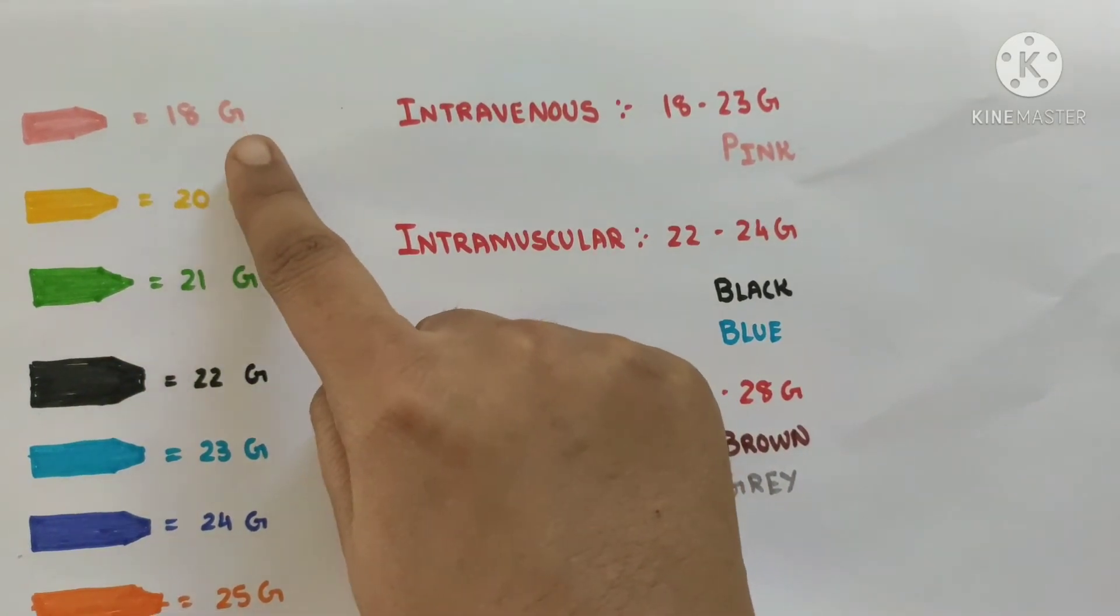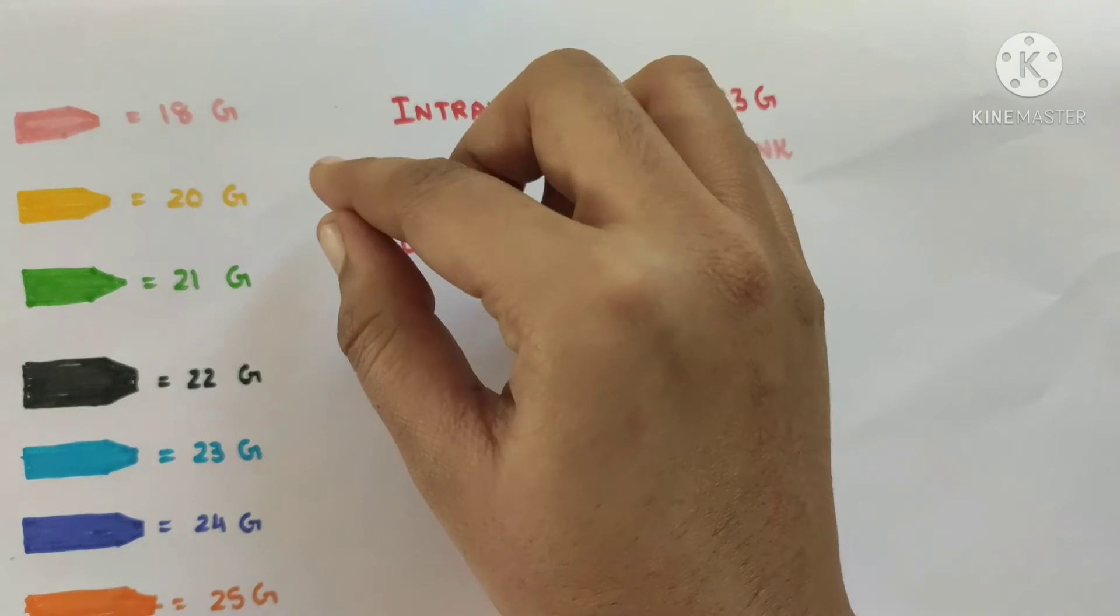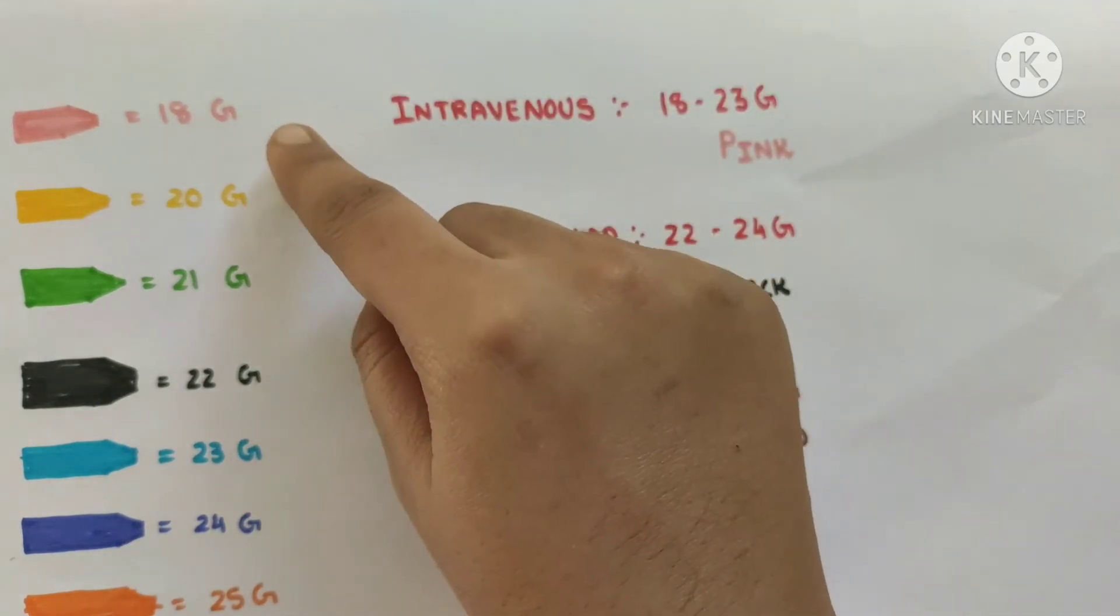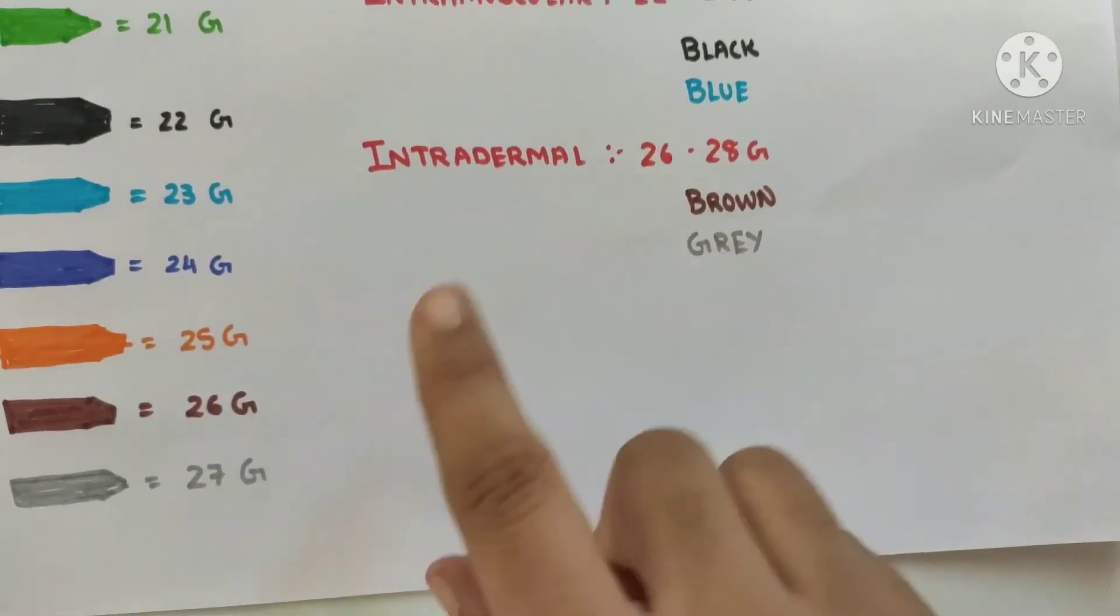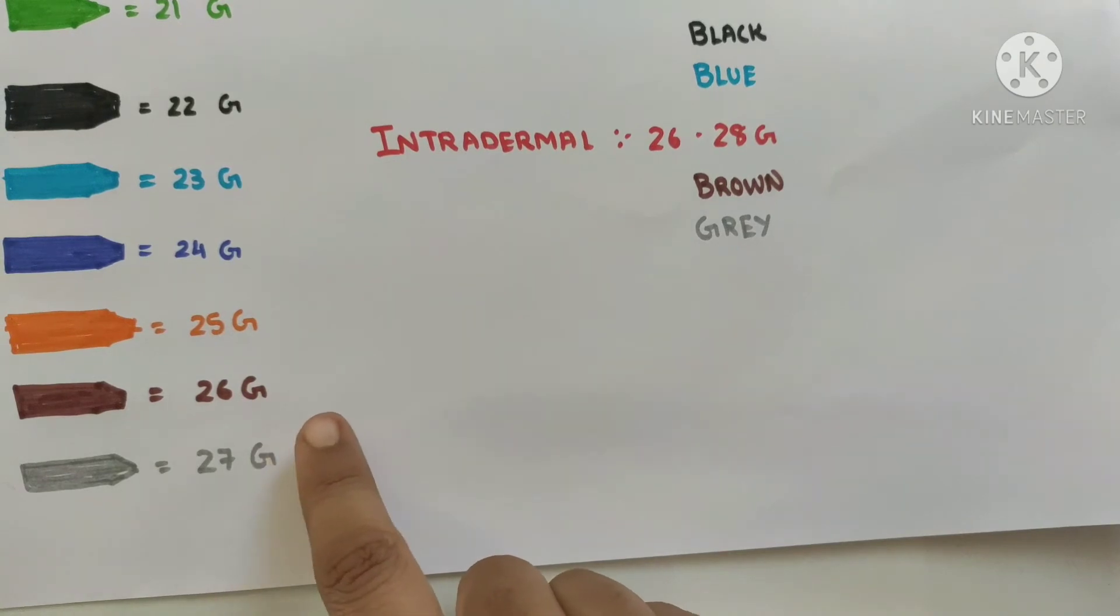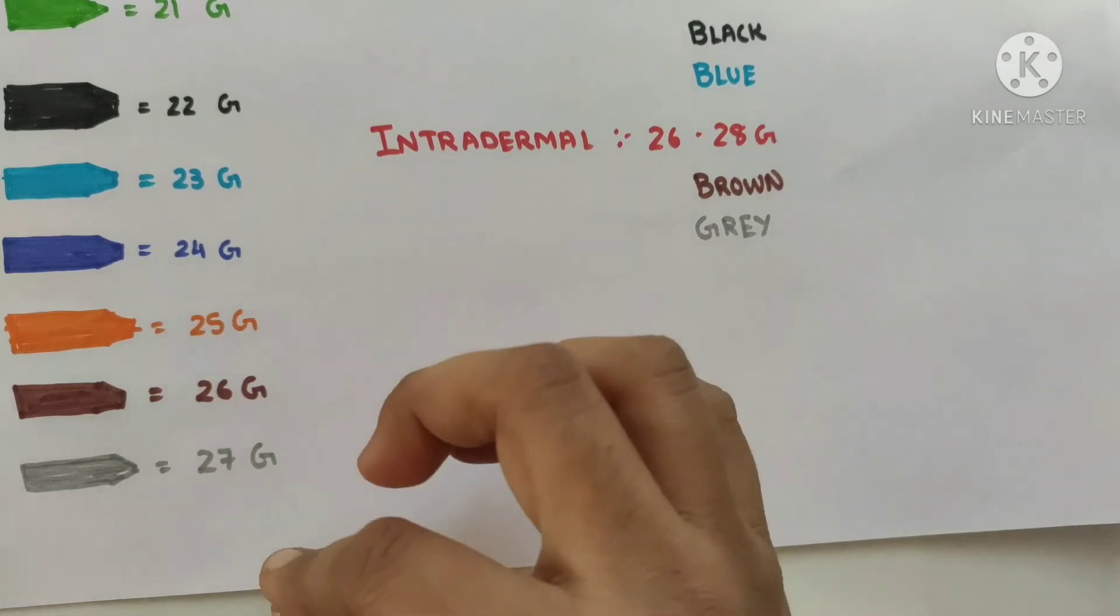So it will be used when we have to inject large amount of drug. And once the gauge is the highest, it means the diameter of the shaft is very less, hence it is used to inject very small amount of drug.